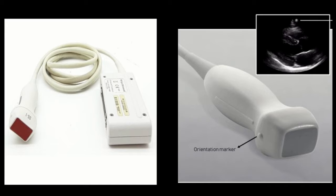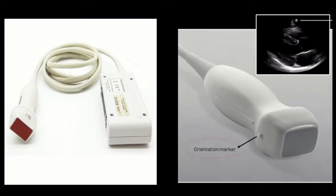There is a marker called the orientation marker, and it is very important to place the probe on the chest of the patient according to the orientation marker, otherwise you may get confused between left and right-sided cardiac chambers.